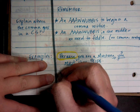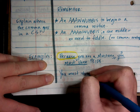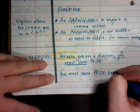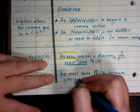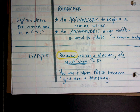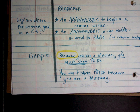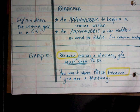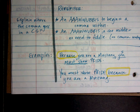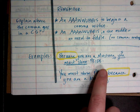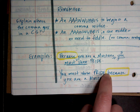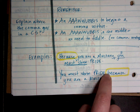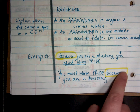Now, what if I said: 'You must show pride because you are a mustang'? Write this down. Now where's my allubus? In the middle. And an allubus in the middle — no need to fiddle. So I don't need a comma here. So all of you who are so addicted to putting a comma in front of 'because' — stop it. You didn't know, but now you know. You are never going to have a comma right there. There's an allubus in the middle, no need to fiddle.